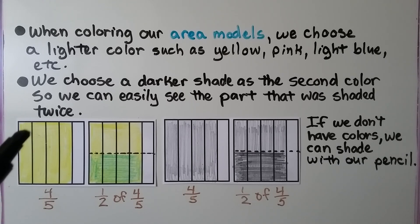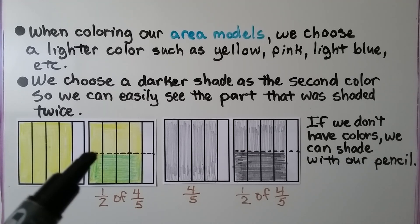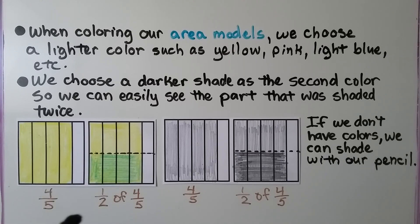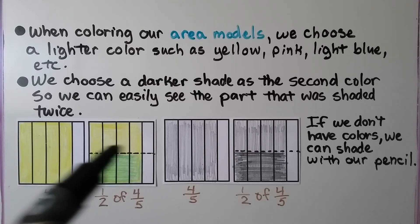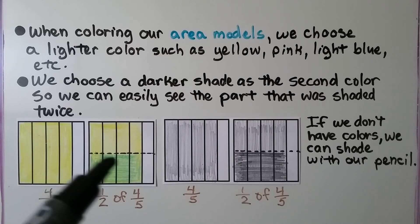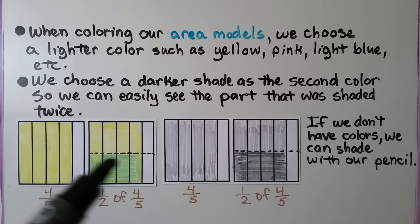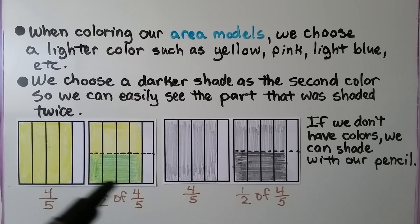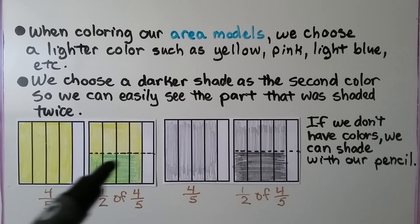We color four-fifths with a light color like yellow. Since we need half of the four-fifths, when we split it in half we shade those four parts in a darker color like green or dark blue.